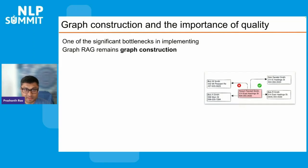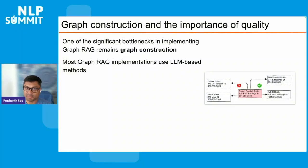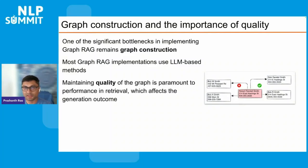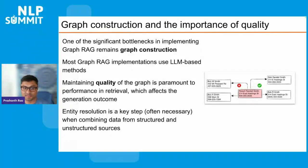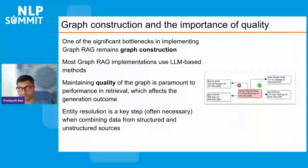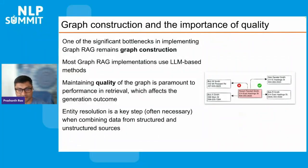One of the significant bottlenecks in implementing GraphRAG remains graph construction, and this slide focuses specifically on the importance of quality in the graph. Most GraphRAG implementations use LLM-based methods, and maintaining quality of the graph is paramount to performance in retrieval, because this directly affects the outcome of the generative process in the LLM. Entity resolution is a very key step, often necessary when constructing graphs using a combination of structured and unstructured data. You need a sophisticated pipeline for entity resolution to ensure you don't have duplicate representations that can corrupt the context for retrieval and generation.